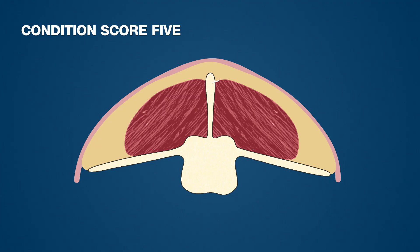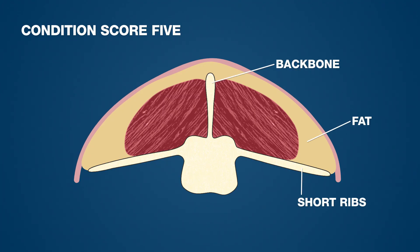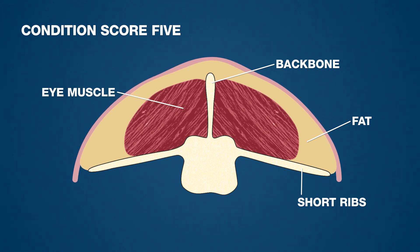Condition score 5 will have an excessive level of muscle and fat cover. You won't be able to feel the backbone or short ribs at all even if you press. The eye muscle will be very full, making it very round from the backbone down to the short ribs.